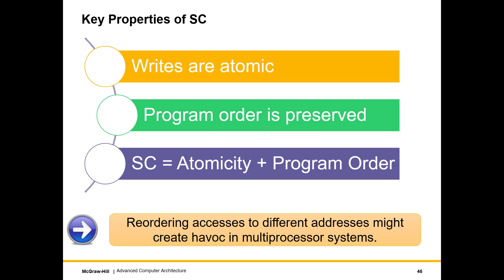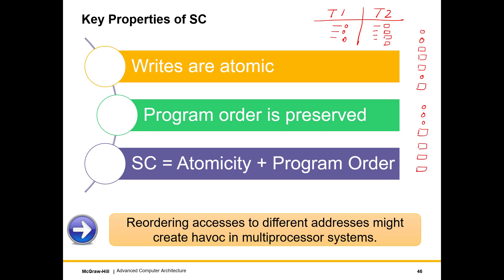The key properties of SC: we take two threads, consider a two-threaded system with operations, and we create an interleaving of them. Any interleaving is going to represent a sequentially consistent outcome as long as we interleave them in a certain manner and the execution is legal, and of course the interleaving is as per program order. A sequentially consistent system can still have multiple outcomes — that is fine — but all of them have to be produced via an interleaving where two things are preserved: legality and program order.